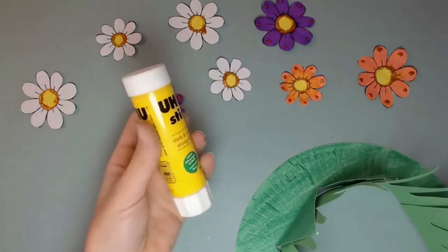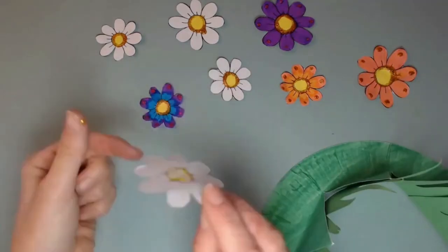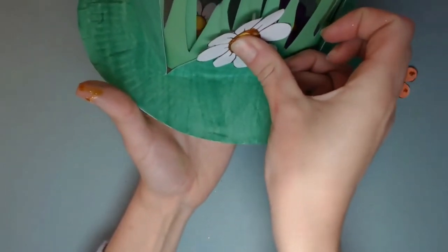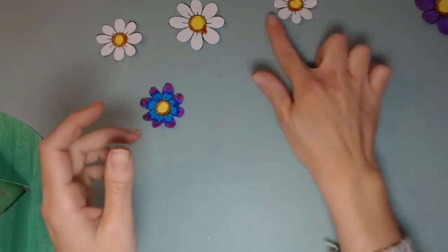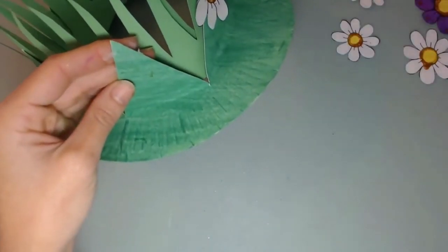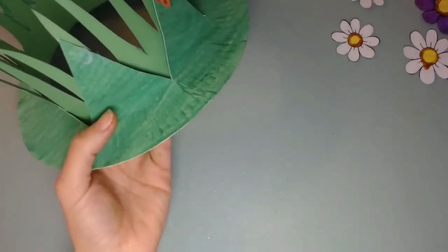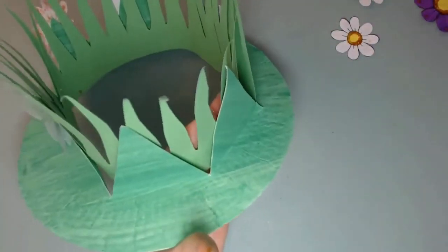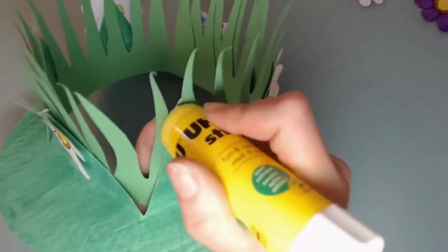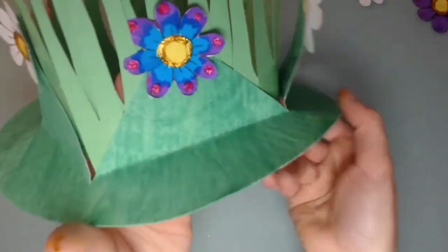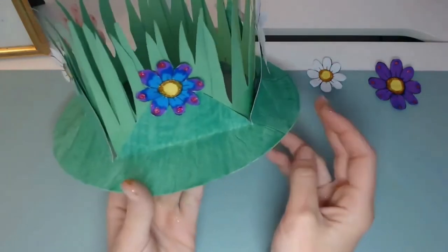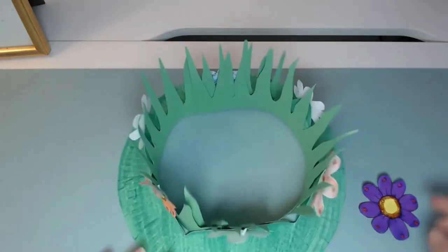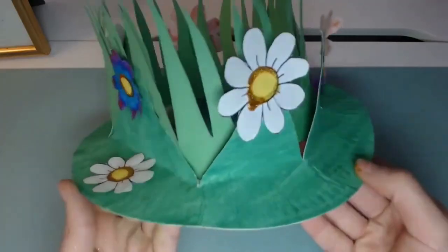Now we're going to be gluing our flowers on our spring hat. You're going to put some glue at the back of the flower and stick it on the triangle. It is actually easier to put glue on the triangle first and then stick your flowers down. You can make a pattern: one white flower, one colored flower. You can stick it anywhere on the hat actually. I like sticking it on the triangles. That looks really awesome. Now we have two flowers left. I've decided to stick one at the bottom, and I'm going to stick the other one at the bottom on the opposite side. It's really looking like a spring hat now.